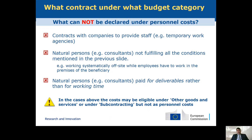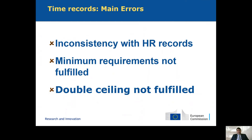Now let's switch to time records. The main issues that may appear with time records include: inconsistencies with HR records such as holidays, work-related travel, and sick leave; minimum requirements for timesheets not being fulfilled; or issues with the double ceiling. On the next slides we will explain what the double ceiling is about.